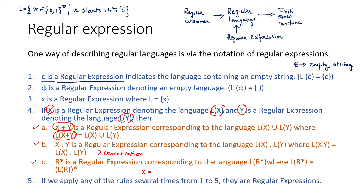a + b is a valid regular expression. We can consider a single 'a' as regular expression one, and a single 'b' as regular expression two, and we are combining them using the plus operation as described in point (a).